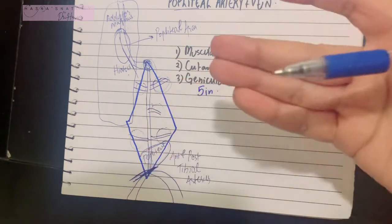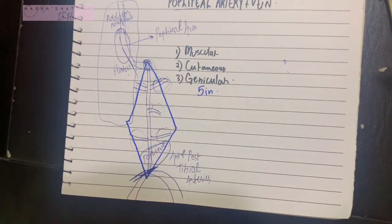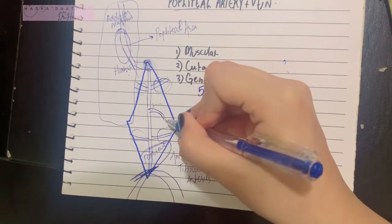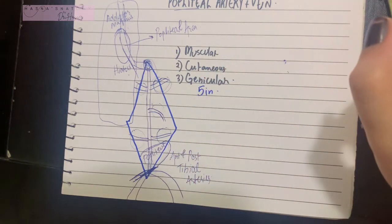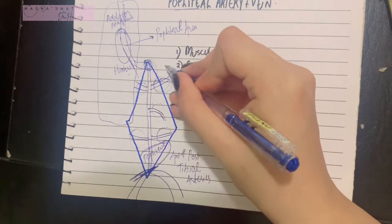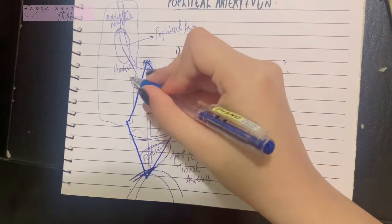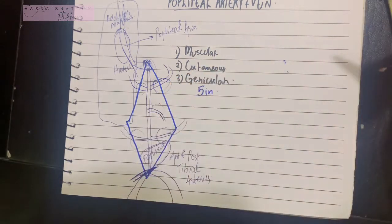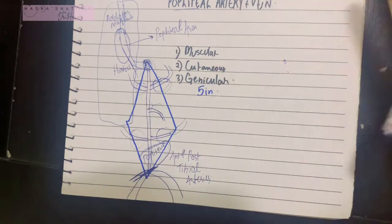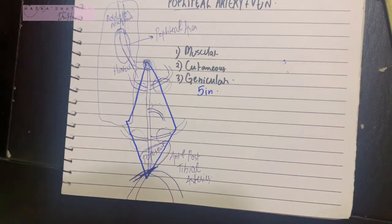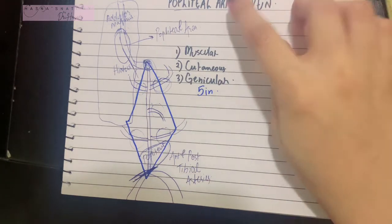The five genicular branches are: superior lateral genicular, superior medial genicular, middle genicular, inferior lateral genicular, and inferior medial genicular arteries. The middle genicular artery pierces the oblique popliteal ligament to enter the knee joint and supply its ligaments. The superior and inferior genicular arteries pass to the anterior compartment in front of the knee and participate in the anastomosis over the patella.